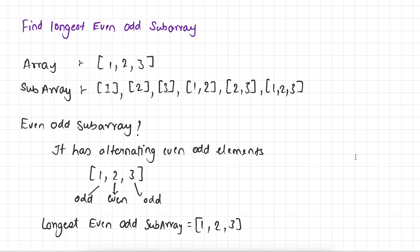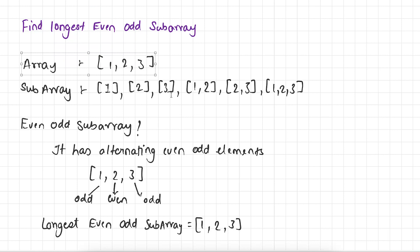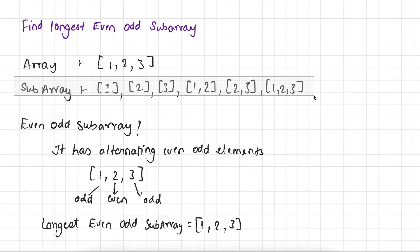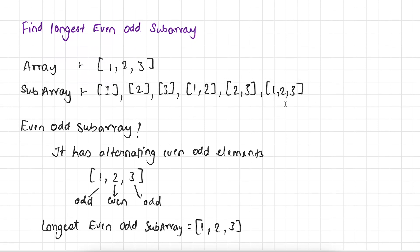We are given an array and our task is to find the longest even-odd subarray. First thing first, what does it mean by subarrays? So let's say we have an array 1, 2, 3. Then all the possible subarrays of this given array are 1, 2, 3, 1-2, 2-3, and 1-2-3. An array is said to be a subarray when elements of that subarray are picked from the given array in contiguous manner.